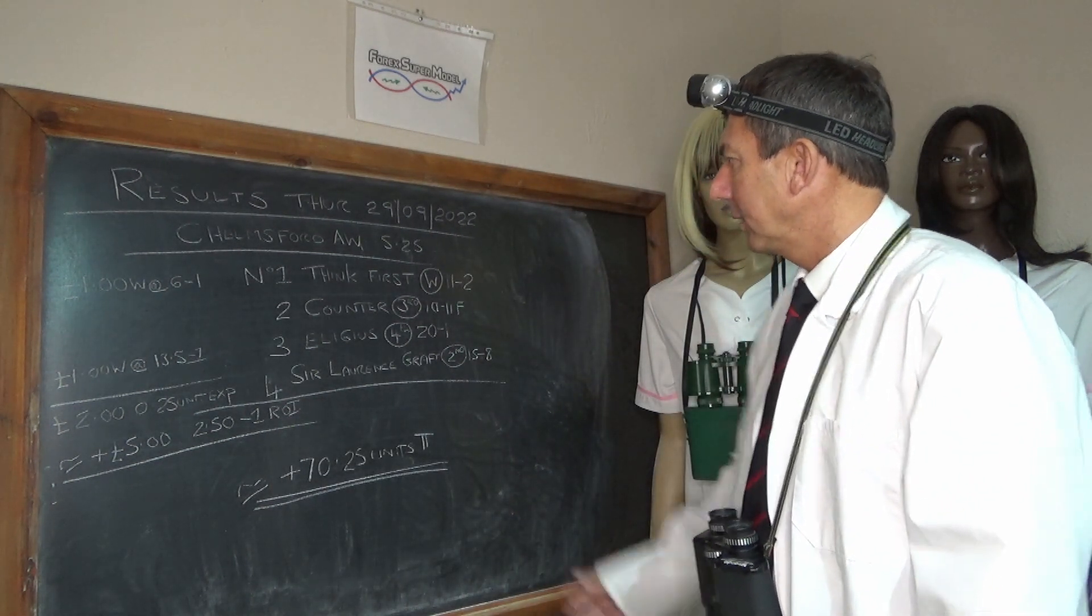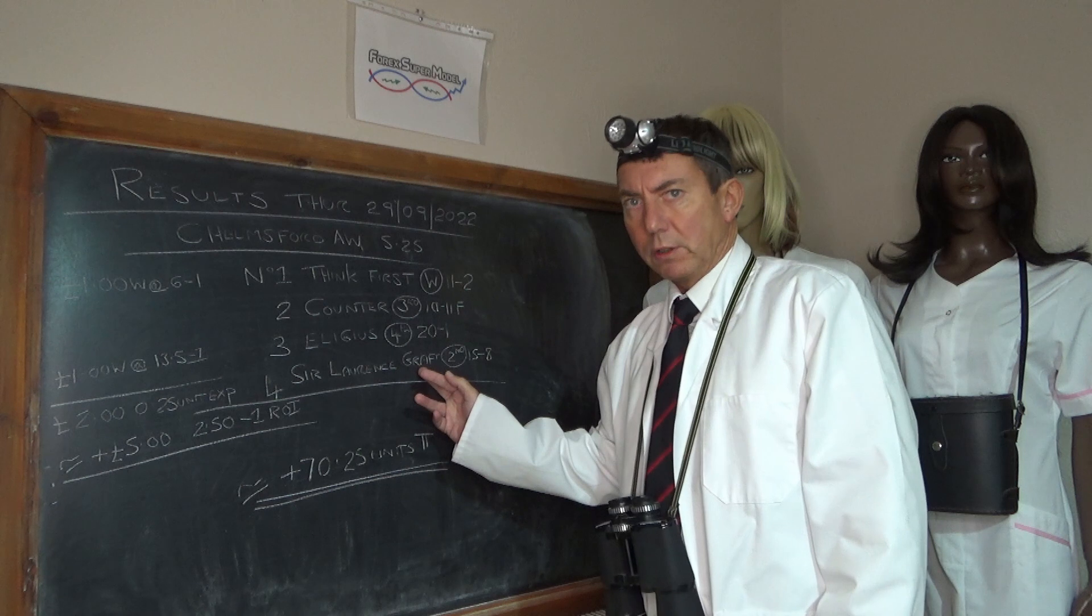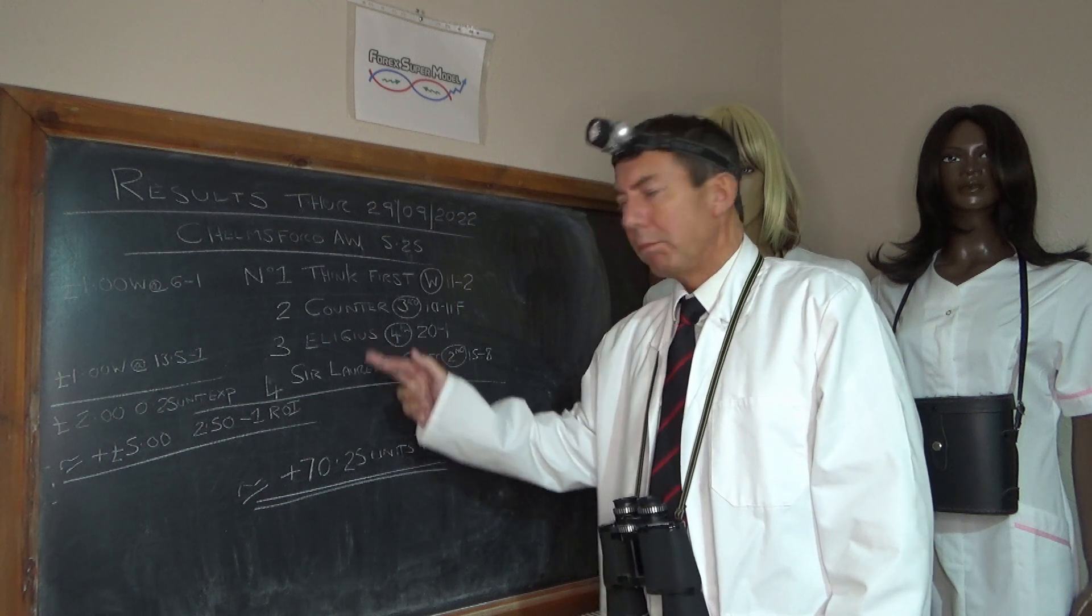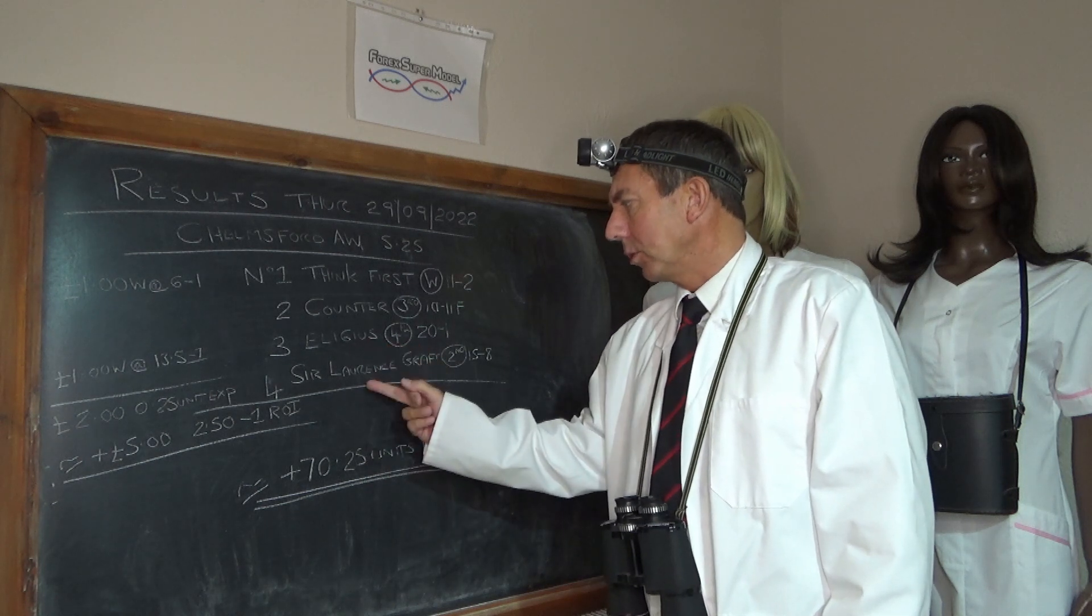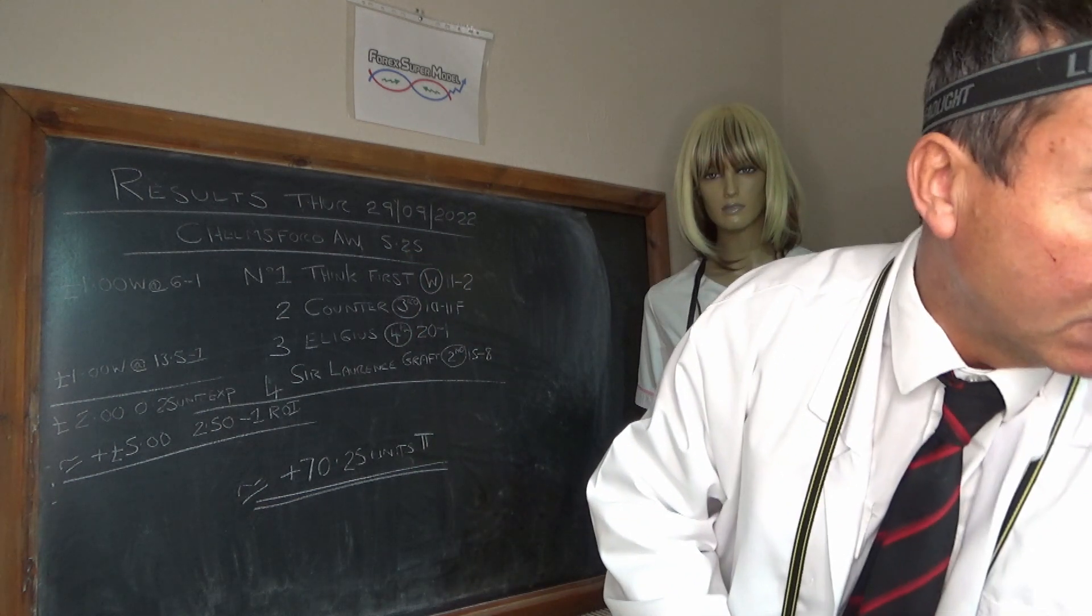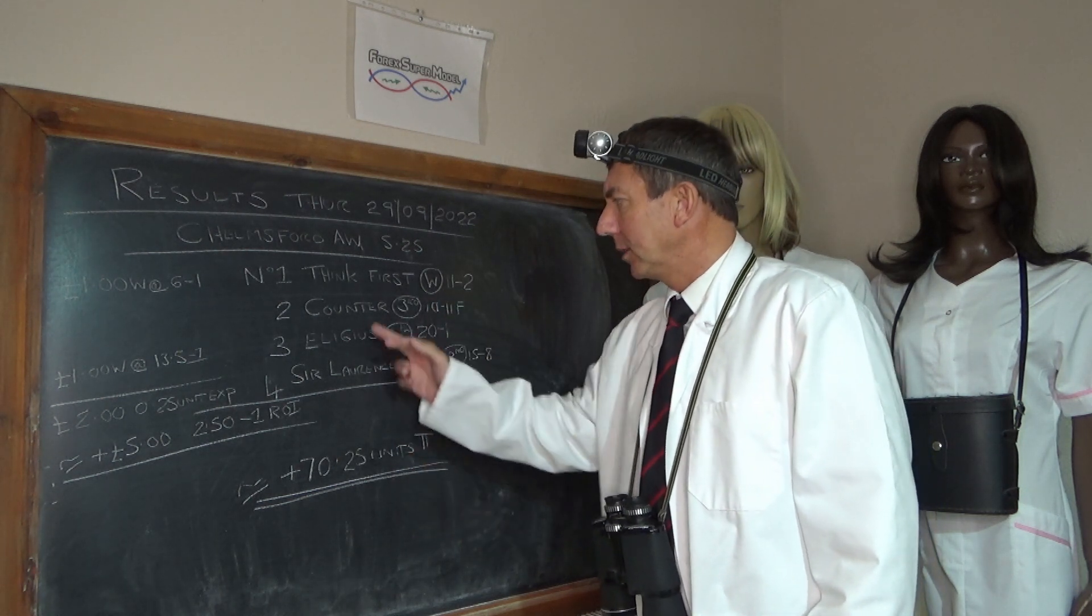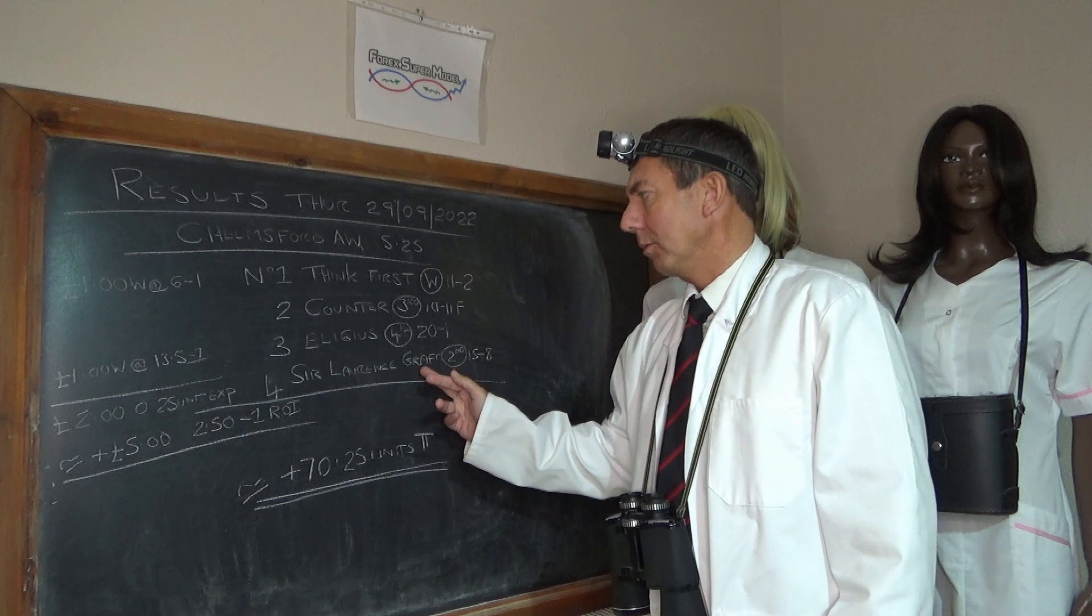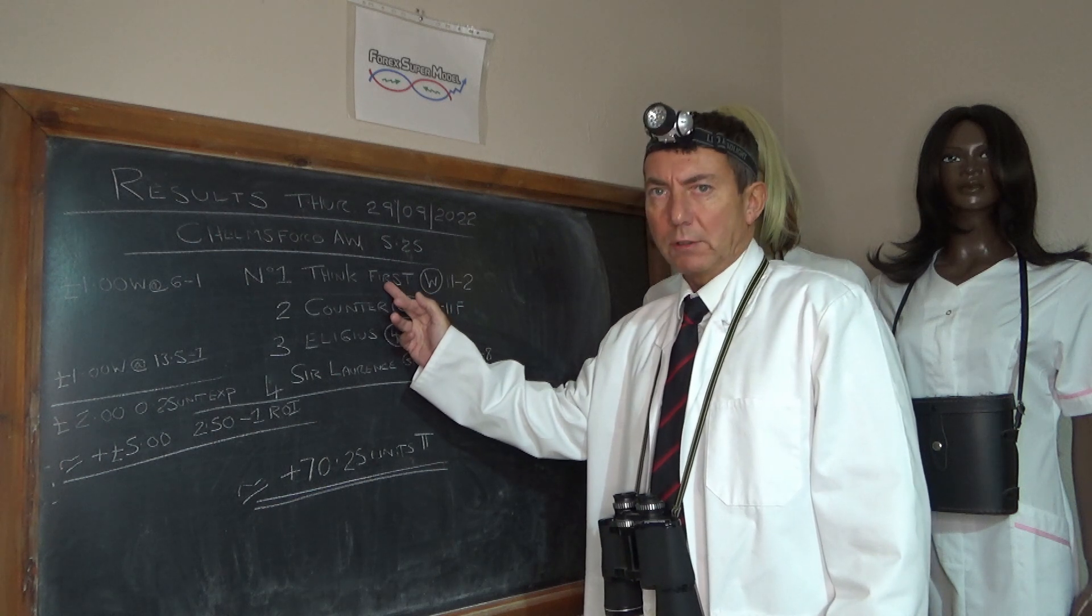So what do we think of that then? Well we thought that Counter and Sir Lawrence Graf, which were the two short priced front end favourites, we thought that they were one paced horses. If you look at the video yesterday, you'll see the explanation. But the gist of it is, these were one paced horses in a speed environment. Chelmsford 10 furlongs is a speed environment on the all weather. And so it transpired, the speed horse we said was think first, which turned out to be correct.